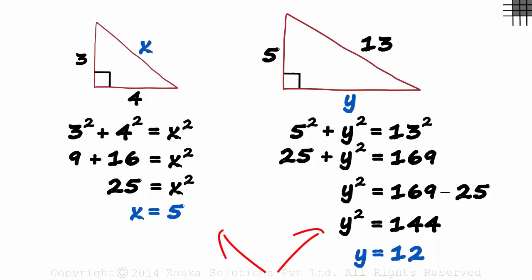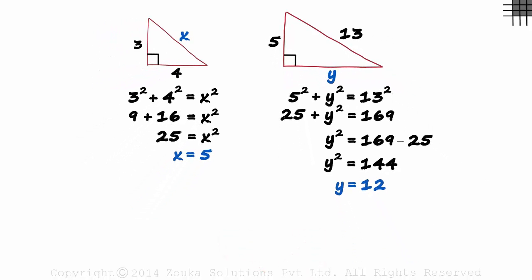These examples were pretty easy to solve. But these two examples also tell us something very interesting. Three, four and five form a Pythagorean triple. A Pythagorean triple consists of three positive integers in which the sum of squares of two numbers is equal to the square of the third.